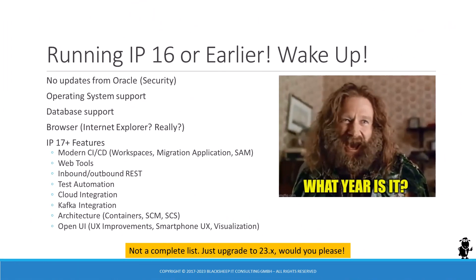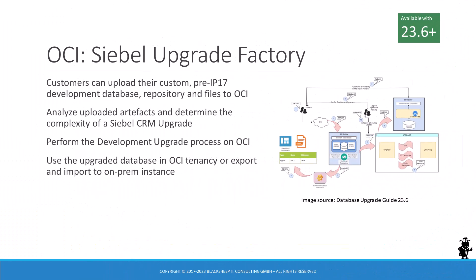If your organization is running Siebel CRM IP 16 or earlier, you're looking at seven or more years of missed innovation — it's about time to upgrade. Upgrading a Siebel environment from IP 16 or earlier can be a daunting task, with cost and effort in the range of several person years. Once you're on Siebel 23, the Oracle continuous release model ensures that you never have to upgrade again. Projects that have not yet upgraded can benefit from the latest addition to Oracle's cloud management frameworks: the Siebel Upgrade Factory, an extension of the OCI-based Siebel Cloud Manager (SCM), available in the OCI marketplace.